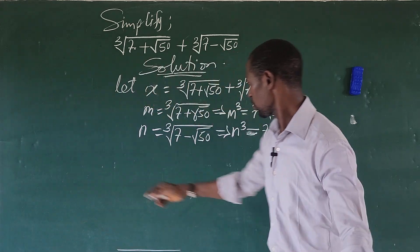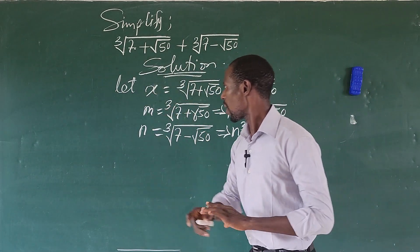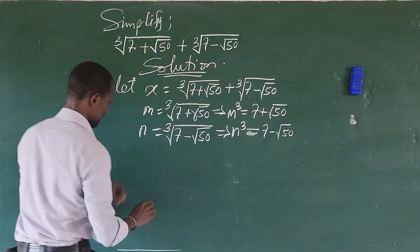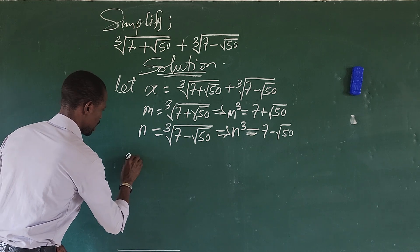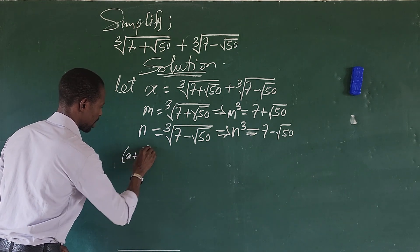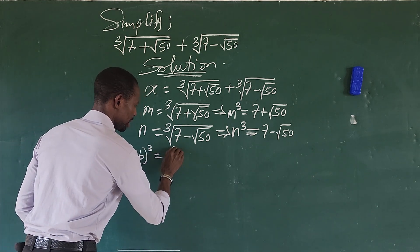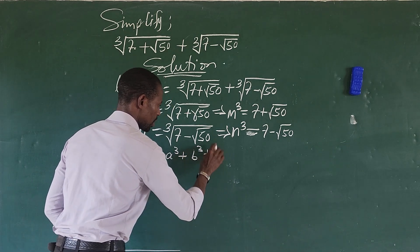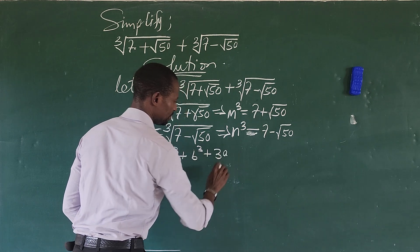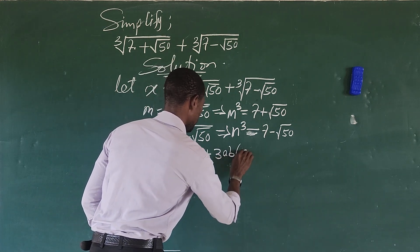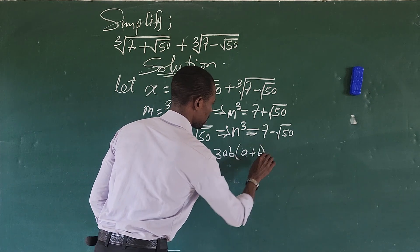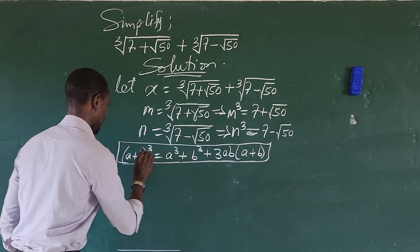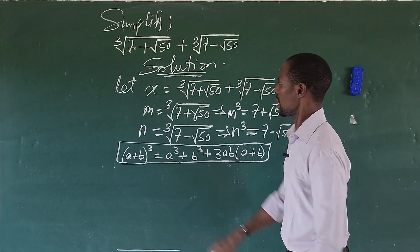Now we recall our algebraic identity: (a + b)³ = a³ + b³ + 3ab(a + b). Remember this expression, because we're going to use it to eliminate the radical by cubing both sides of the equation.